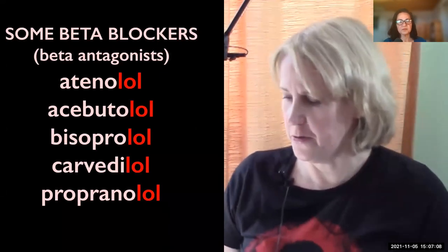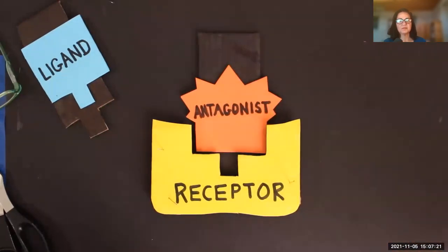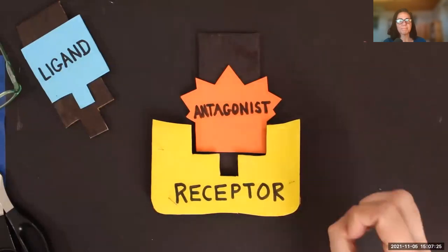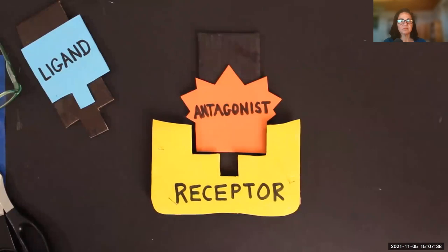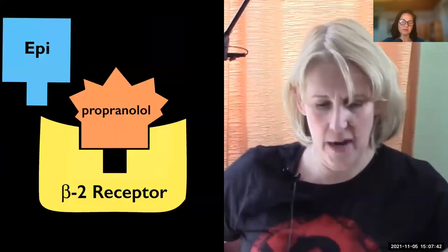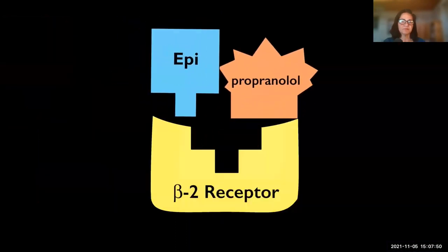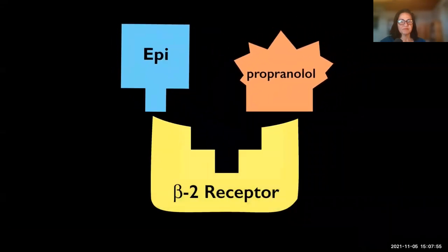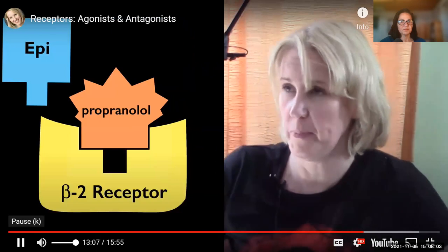If we take an asthma patient and give them a drug that is a beta-2 antagonist or beta-2 blocker — such as atenolol or propranolol, which actually binds both beta-1 and beta-2 receptors — while the antagonist is sitting in the receptor, the receptor is not being stimulated, which means the bronchi are going to be either their normal size or even more narrow. Now if that asthmatic patient has an asthma attack, the normal ligand is going to want to get in so the bronchi can open up, but the antagonist is blocking the effect of the normal ligand. As long as that antagonist is sitting there, it's going to be very difficult for the body to dilate those bronchi.